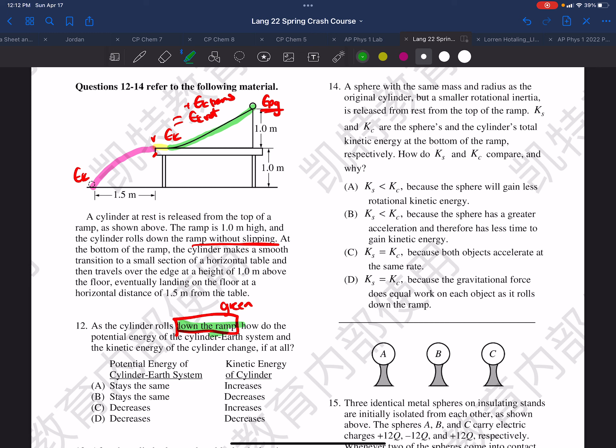How do the potential energy of the cylinder Earth system? So, first thing, what happens to the potential energy?